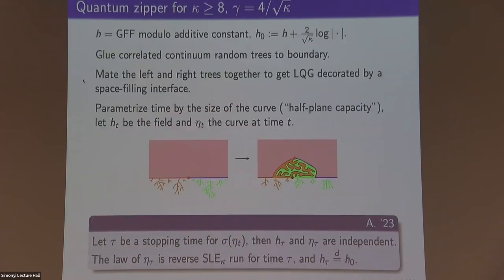Given the mating of trees, I can state the quantum zipper result for kappa ≥ 8, with gamma = 4/sqrt(kappa). Using the same GFF modulo additive constant, we glue a pair of correlated continuum random trees to the boundary and zip them together, giving a random surface decorated by a random space-filling curve. If tau is a stopping time depending only on the curve, the field and curve are independent — the curve is SLE and the field is the same GFF as before.